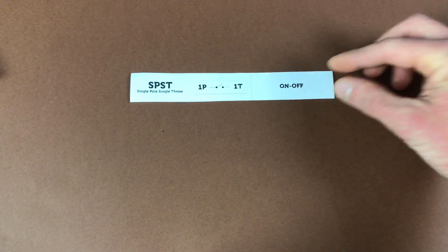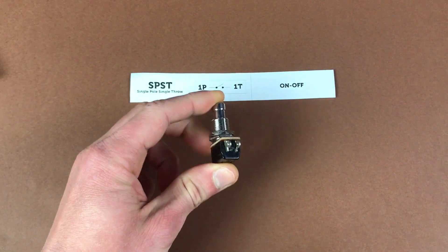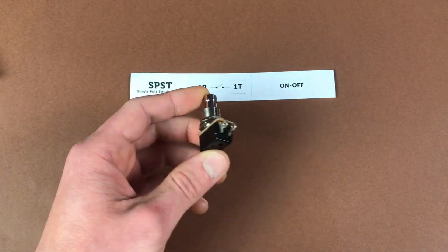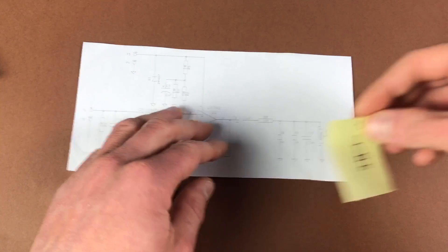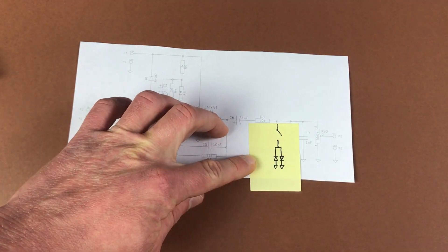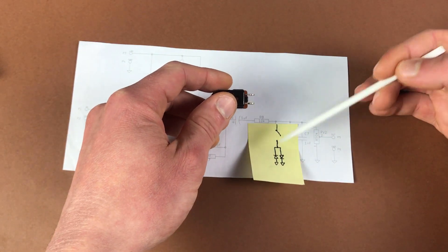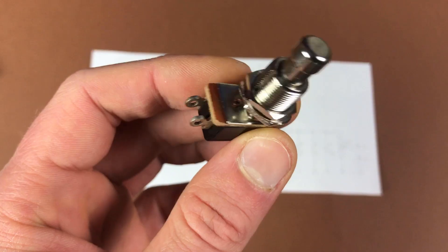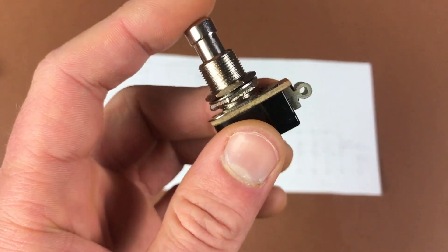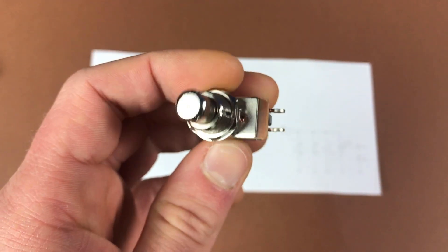So first switch is SPST, single pole, single throw. Single pole means that we can control one circuit with this switch and single throw means only one possible output position. As you see for example we can use it to connect additional clipping diodes. So actually this switch can only works in two states, connected or disconnected.